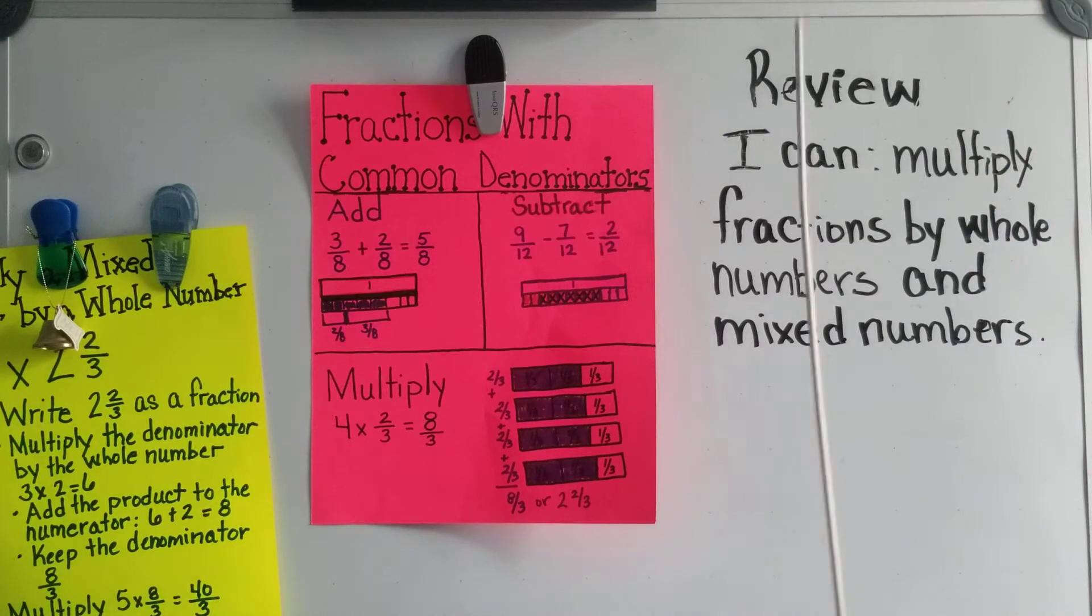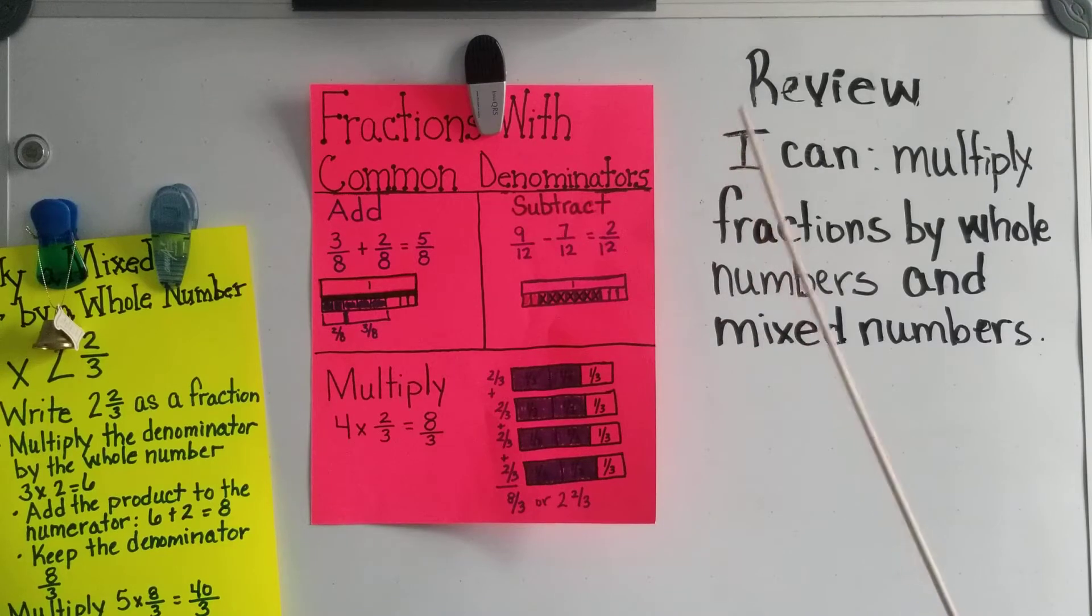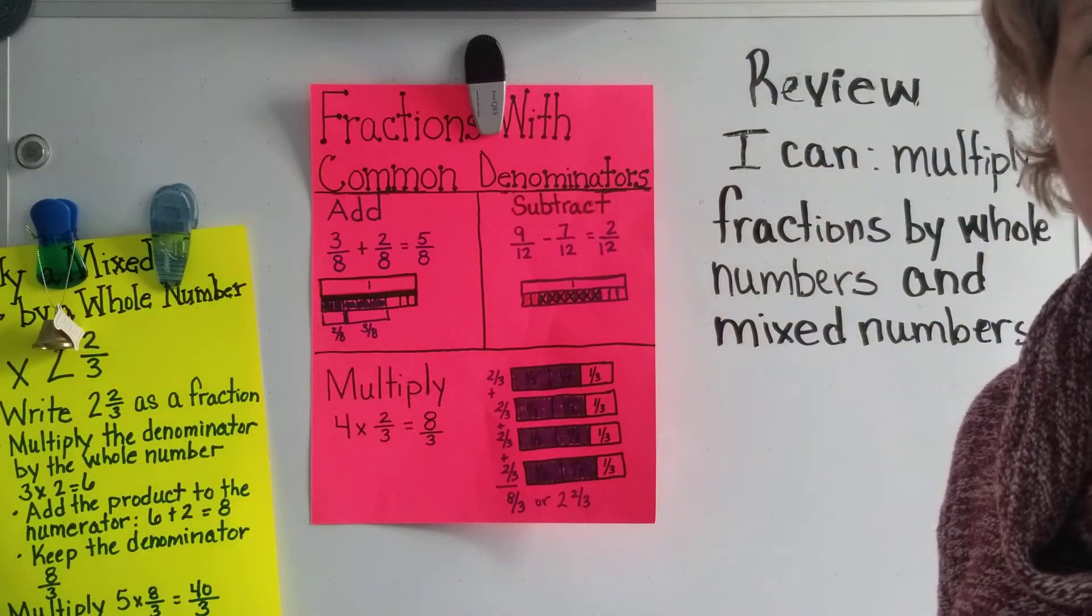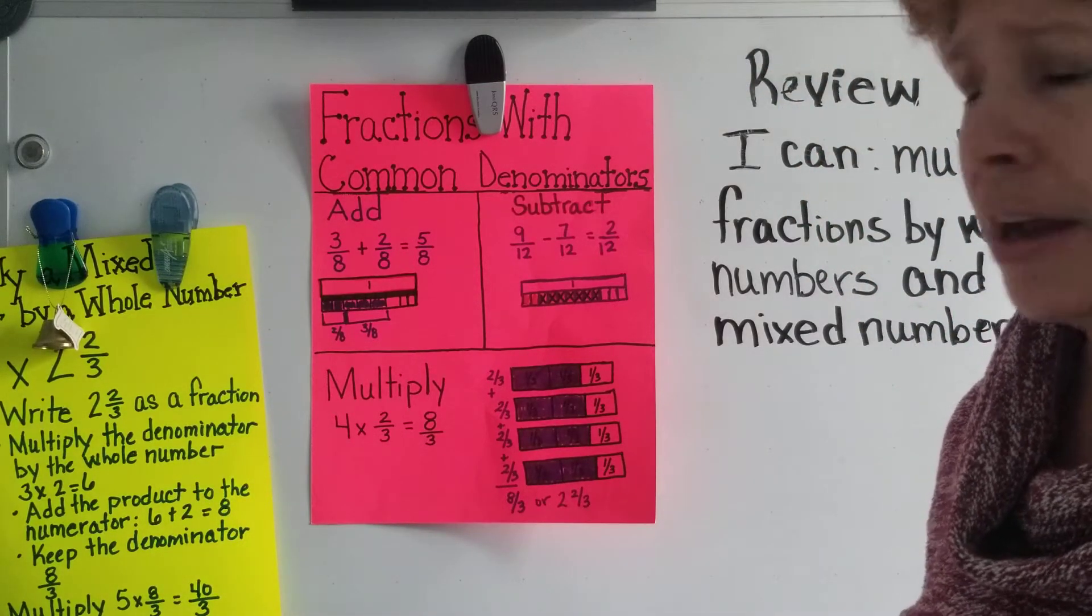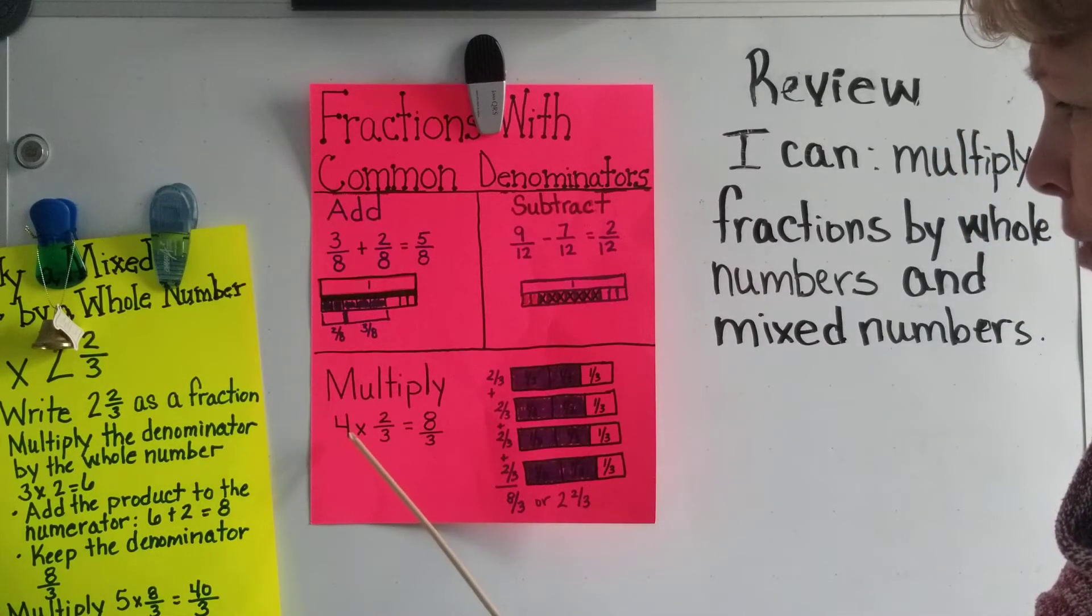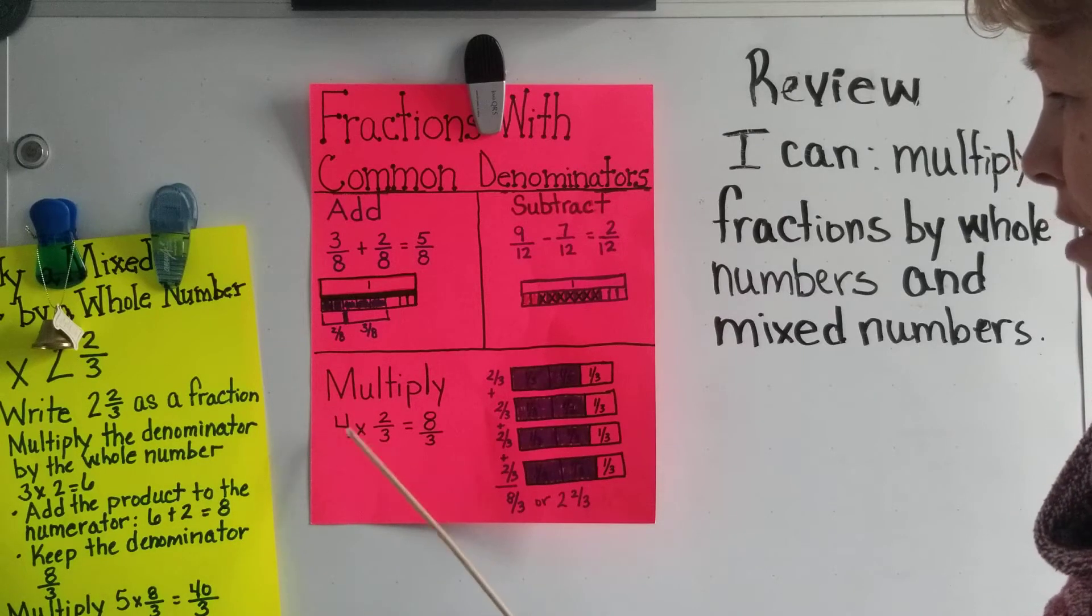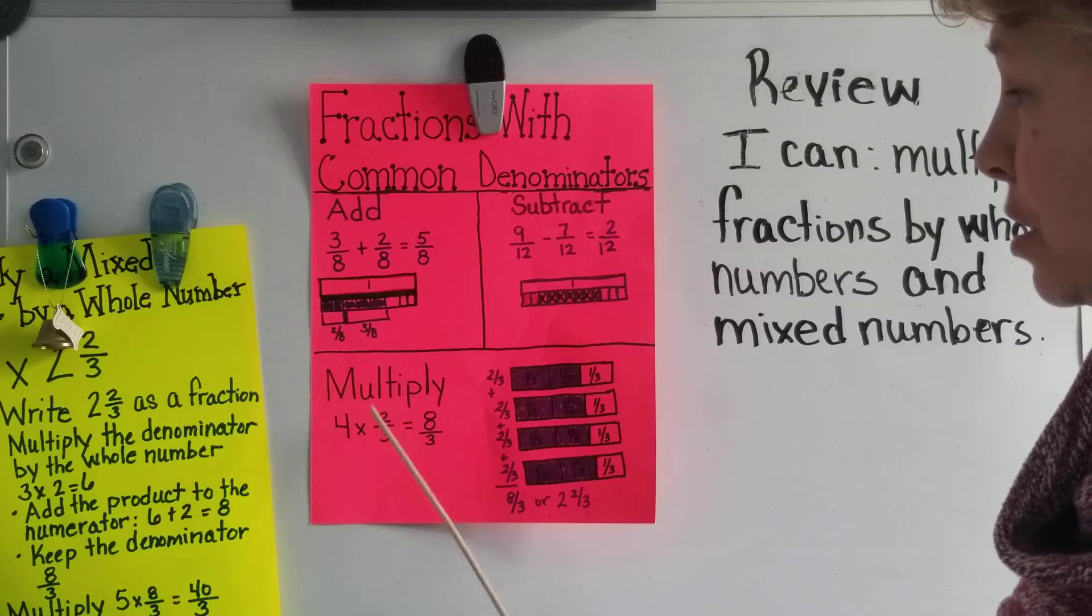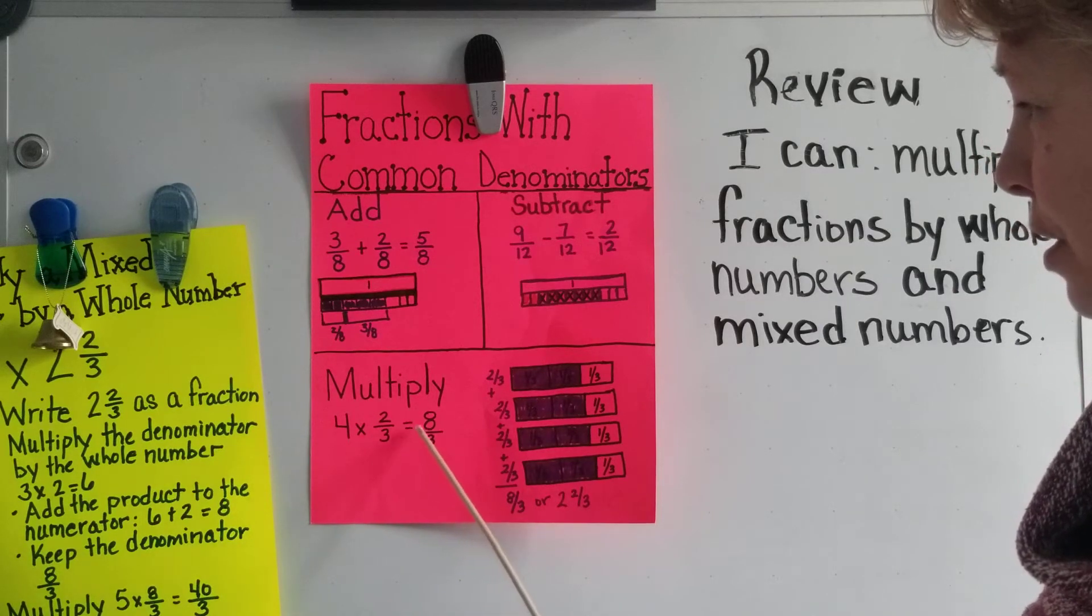So let's go to our objective: I can multiply fractions by whole numbers and mixed numbers. How do you multiply a whole number by a fraction? Well, what you do is you take the whole number times the numerator. So in this case, four times two is eight, and we keep the denominator. So four times two-thirds equals eight-thirds.